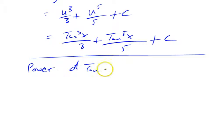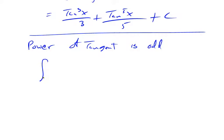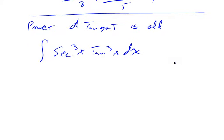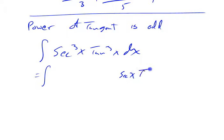Next: the power of tangent is odd. How about the integral of secant cubed x times tangent cubed x dx? This time, I'm going to be looking for a secant substitution. I want u to equal secant x, so du is going to be secant x times tangent x dx. Whatever I have, I've got to split off one secant x and one tangent x.